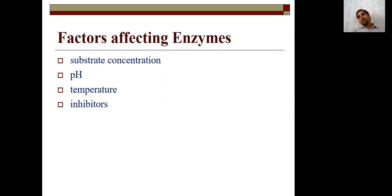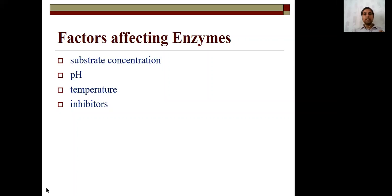Regarding temperature, some enzymes work optimally at body temperature, 37 degrees Celsius. We believe that all enzymes work at 37 degrees Celsius, but that is not quite true. There are many enzymes that work at 37 degrees Celsius, but the optimal temperature can vary. Practically, our body temperature is around 32 degrees Celsius, which affects enzyme activity.